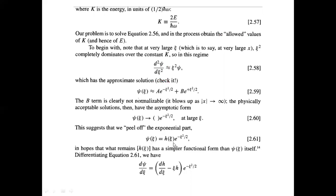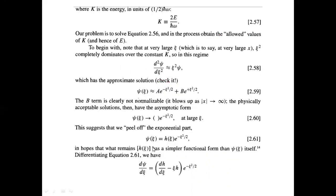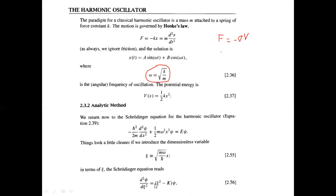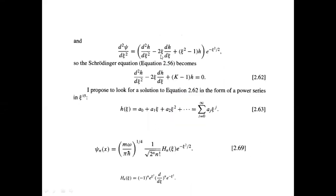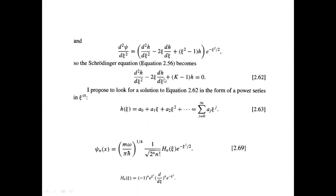We assume the solution is of this form, and substitute it into the Schrödinger equation by computing the second derivative of Psi and plugging it in. The resulting expression gives us a differential equation written in terms of H, where Psi is expressed through H.